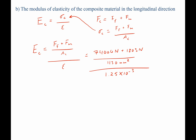Plugging in these values into the calculator, the total modulus of elasticity is equal to 53,665 megapascals. Since there are 1,000 megapascals in a gigapascal, that is 53.665 gigapascals.